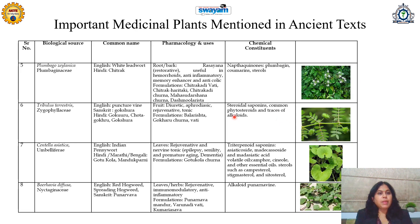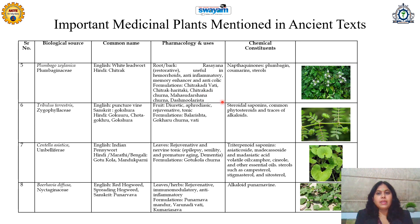Another plant is Plumbago zeylanica, belonging to family Plumbaginaceae. It is called White Leadwort in English, and Chitrak in Hindi. It is used in Ayurveda, Siddha, Unani, and Homeopathy systems. Its roots or bark are useful as a rasayana — meaning restorative or improving the overall health of the body. These are useful in hemorrhoids treatment. It is anti-inflammatory, a digestive membrane enhancer, and anti-colic, due to the presence of naphthoquinones, Plumbagin, Coumarins, and sterols. It is an ingredient of formulations Chitrakadi vati, Chitrakharitaki, Chitrakadi churna, Mahasudarshan churna, and Dashamularishta.